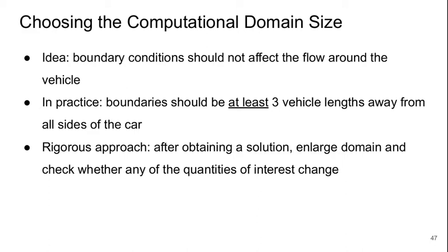Another important thing to think about is choosing the size of your computational domain. The idea here is that for an external flow, the boundary conditions should not affect the flow around the vehicle. In practice, this means that the flow boundaries should be at least three vehicle lengths or whatever the largest of its length scales are away from all sides of the vehicle.